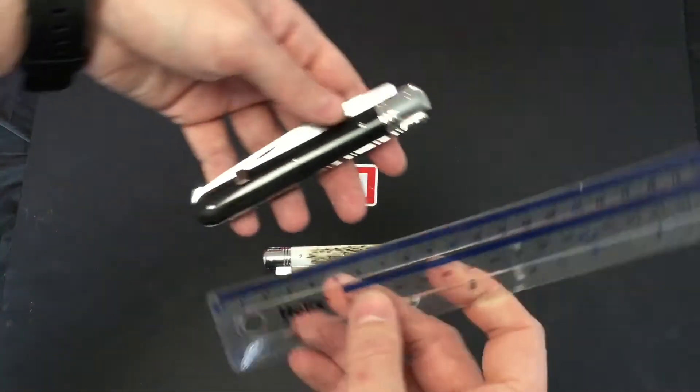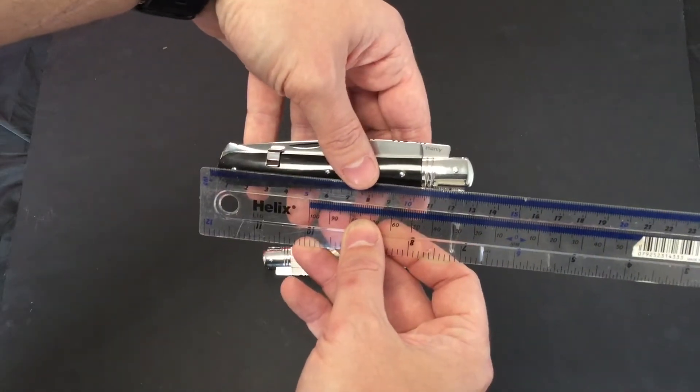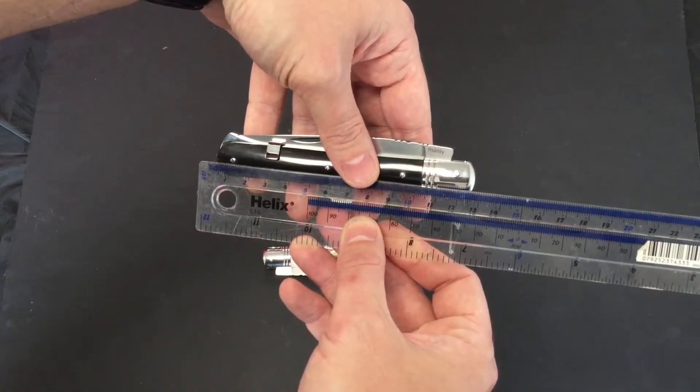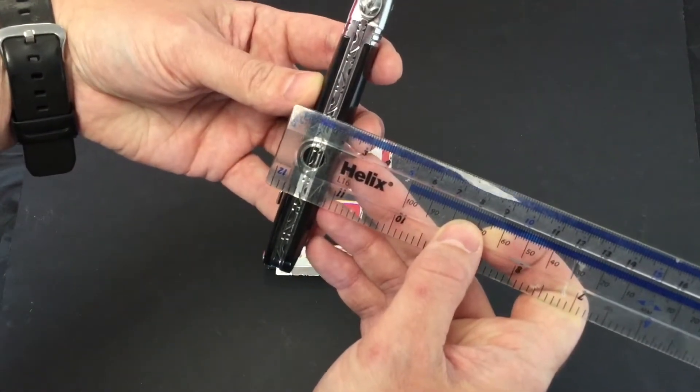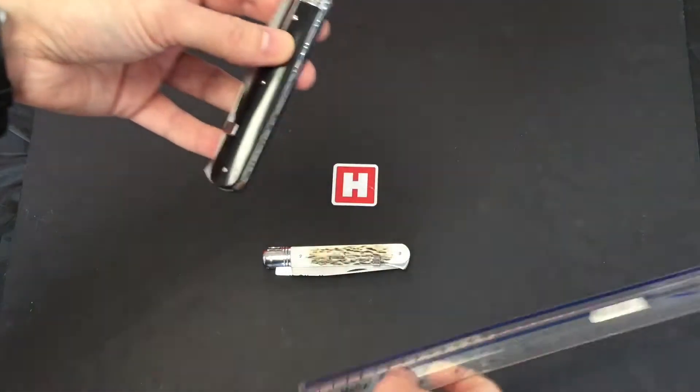Let's give it a measure when it's closed. We're looking at approximately twelve and a half centimeters. The whole width of the knife, we're looking at fifteen millimeters.